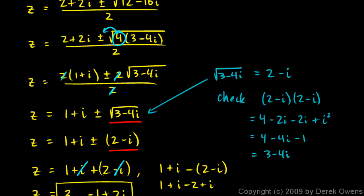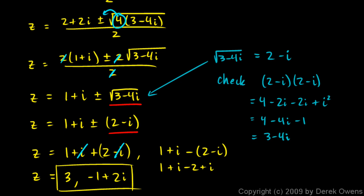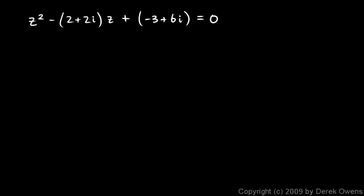So that was this step in our problem. The square root of 3 minus 4i is 2 minus i. Now let's also look at our answer here. We had two answers, 3 and negative 1 plus 2i. Those answers should satisfy the original equation. That means if we take our original problem right here, we should be able to put in these values for z right here and right here, and it should work. It should work out to something that equals 0. So let's try the 3 first. This is our check here. We're just checking our answers to see if they work.